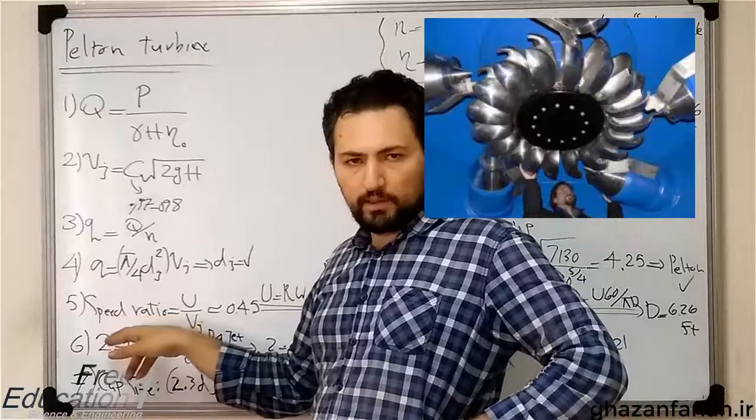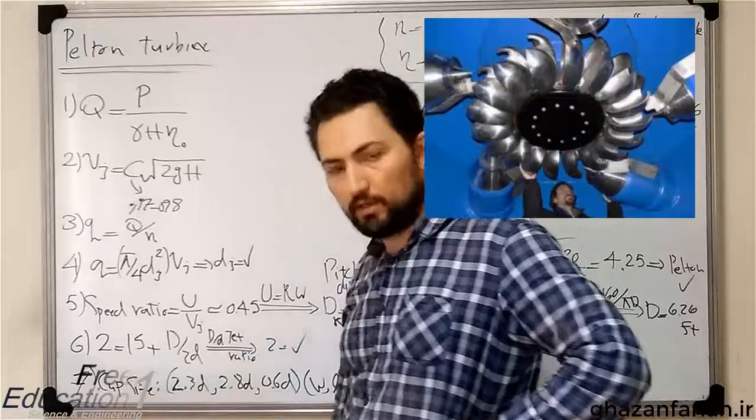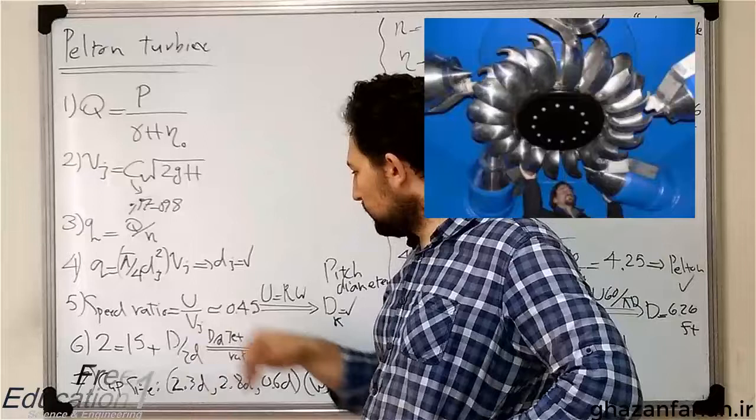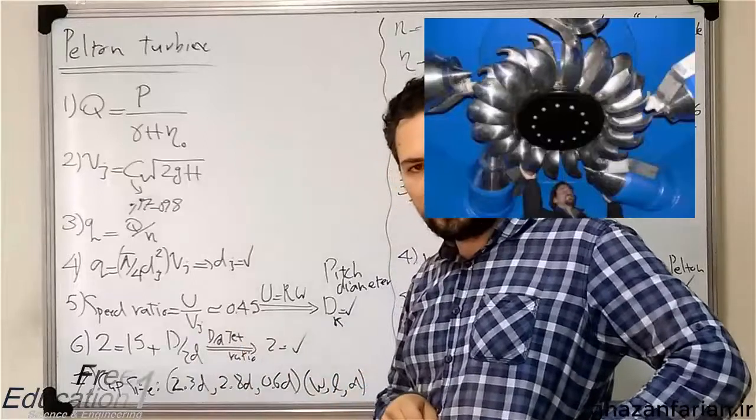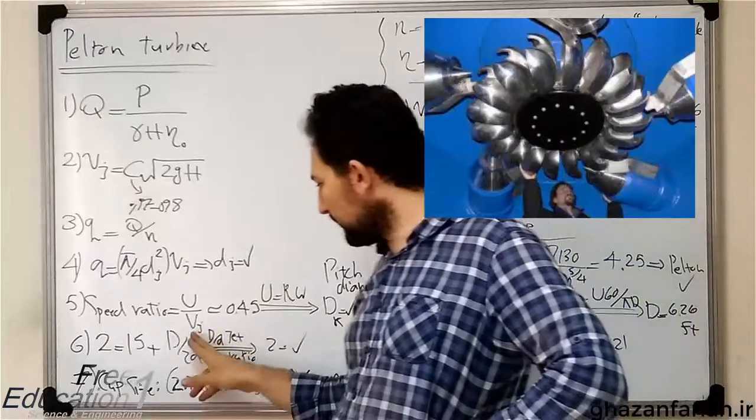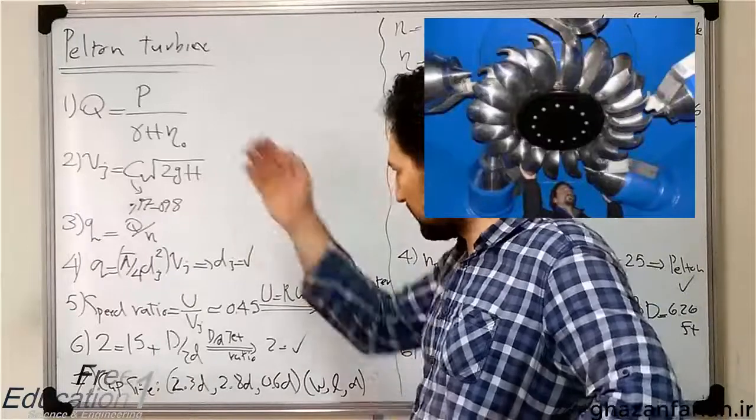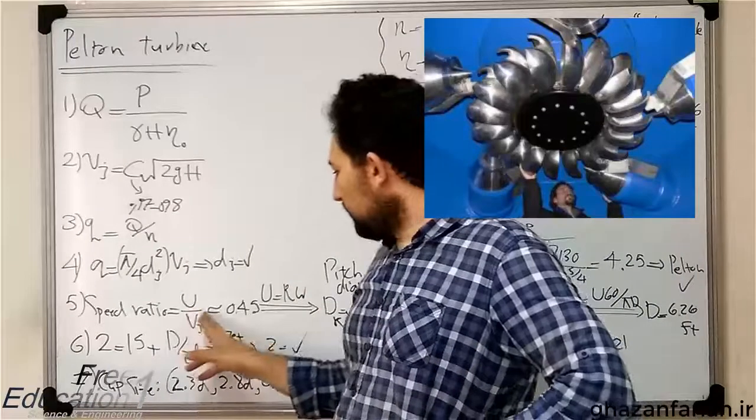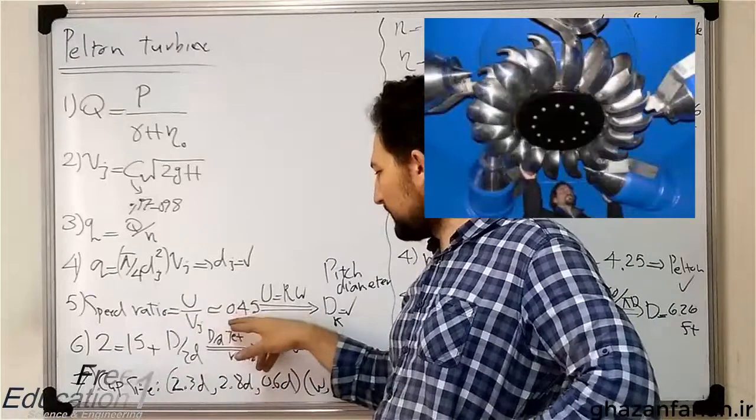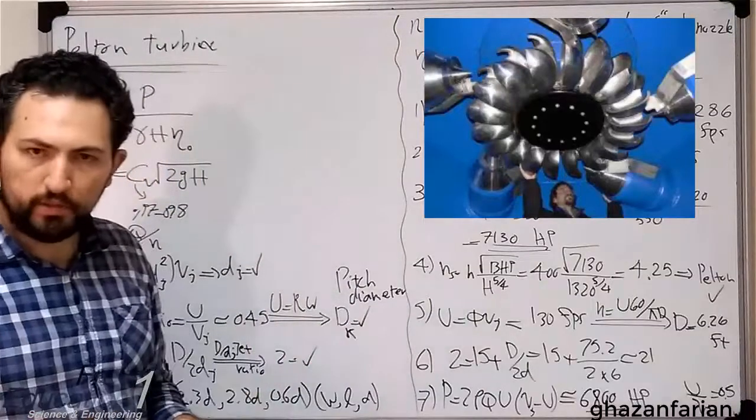We have another relation or another parameter in Pelton turbine, which is the specific speed ratio, which is the ratio of two speeds. The numerator of this relation is the circumferential velocity of the runner, and the denominator is the jet velocity. Again, using the result of step 2. So, this speed ratio is recommended to be approximately equal to 0.45. There is one extra point here.